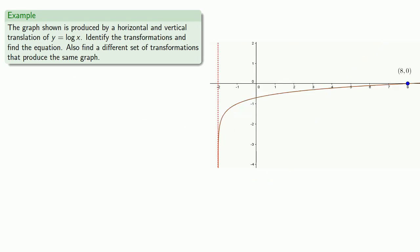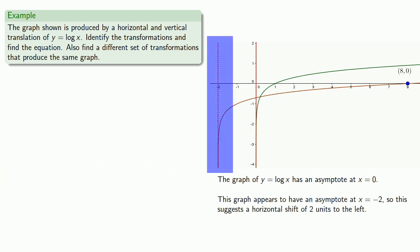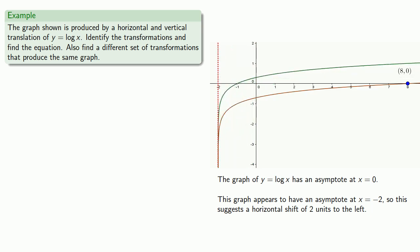Let's take another graph and see if we can find a different set of transformations to produce the same graph. This time, our graph has just horizontal and vertical translations. A good starting point is to remember that the graph of y equals log of x has an asymptote at x equals 0. This graph appears to have an asymptote at x equals negative 2, which suggests a horizontal shift of 2 units to the left. So the graph of y equals log x is translated 2 units to the left to produce the graph of y equals log of x plus 2.